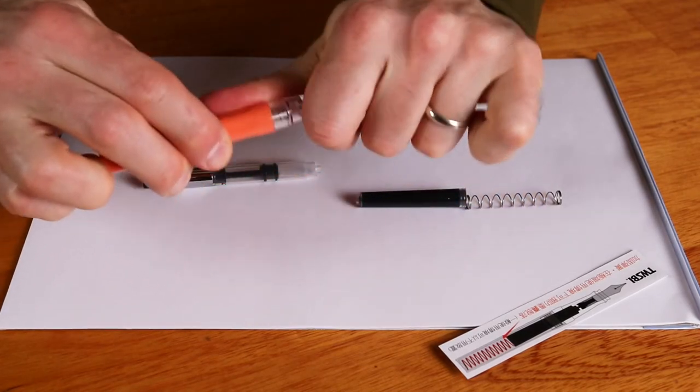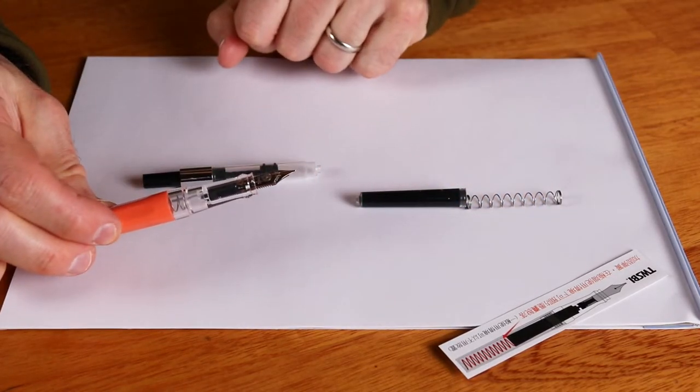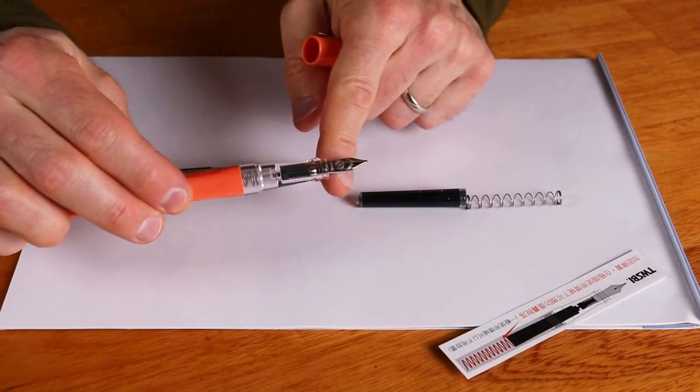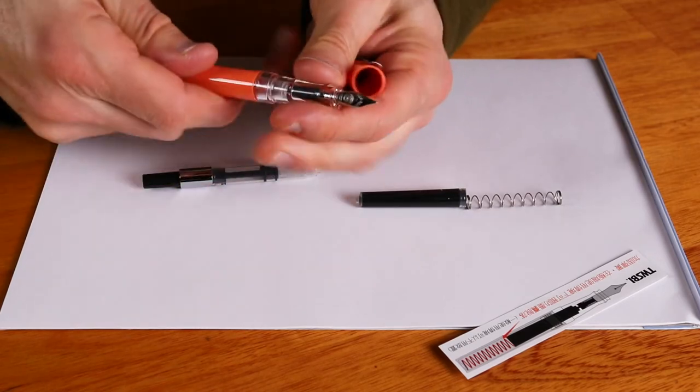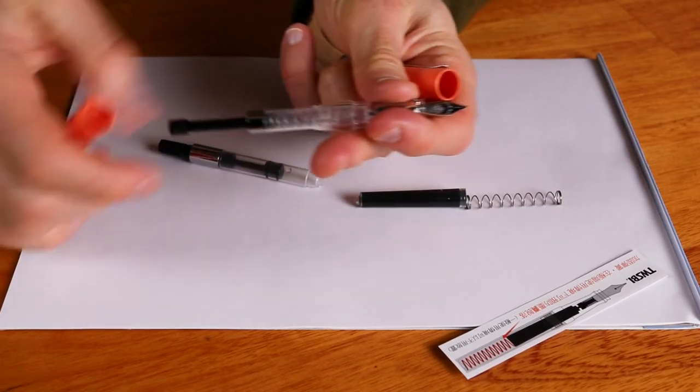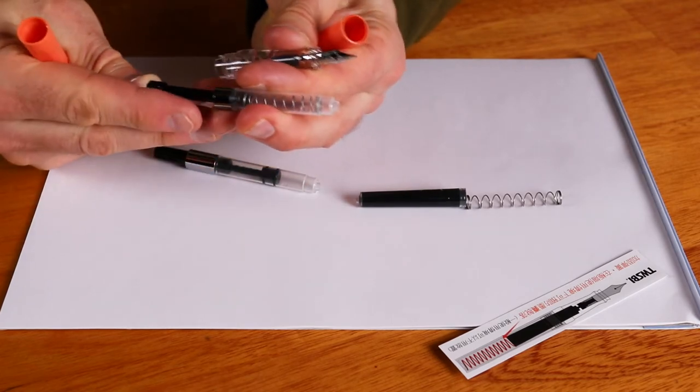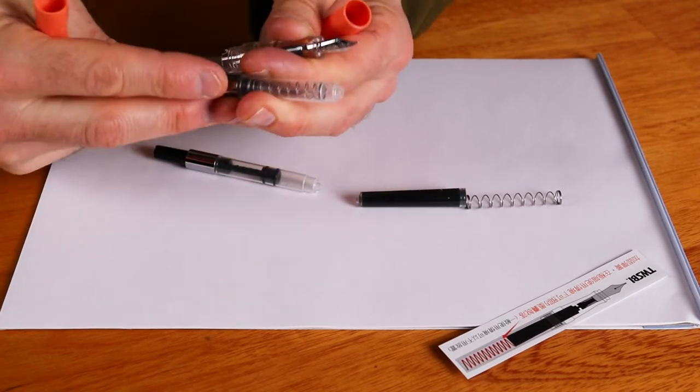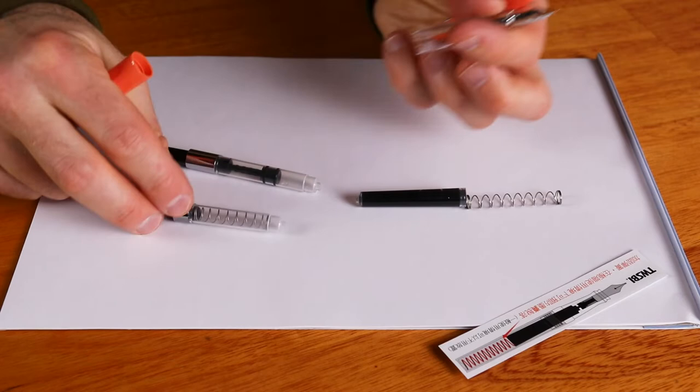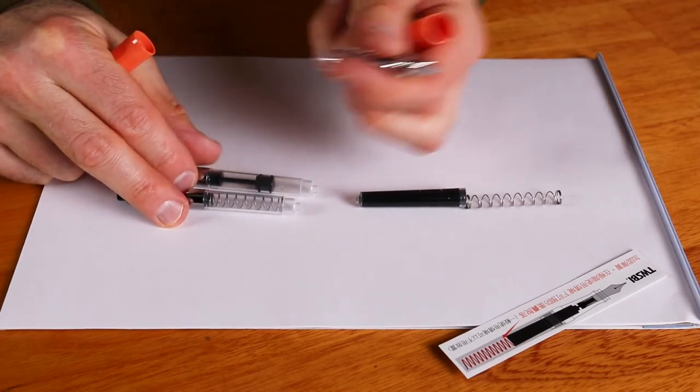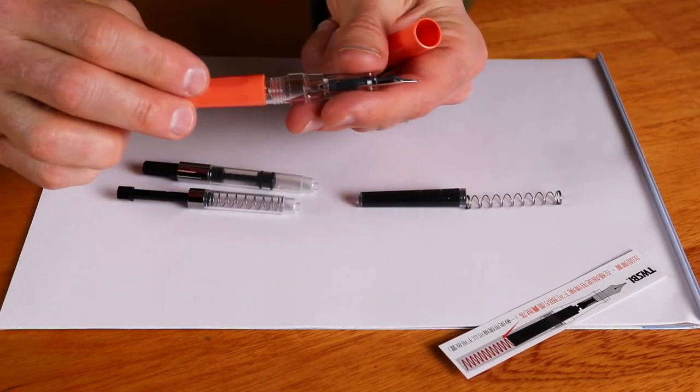If you open up Salmon, we have the same Yovo nib that we've come to love with Twisby fountain pens. If we crack open the barrel here, you see you also get another piston converter which is a push type. So you've got a bunch of options - you can use a cartridge or either of these two piston converters.